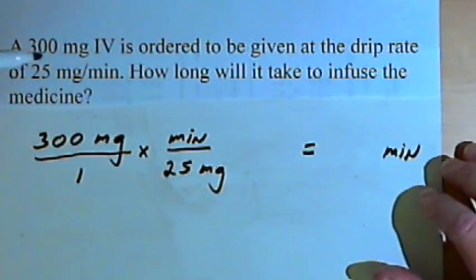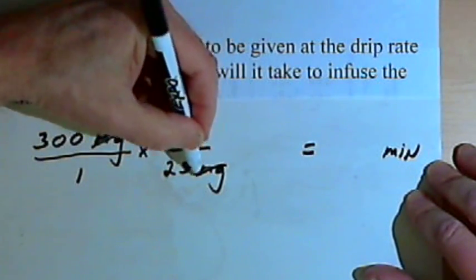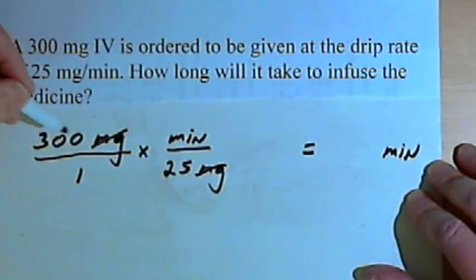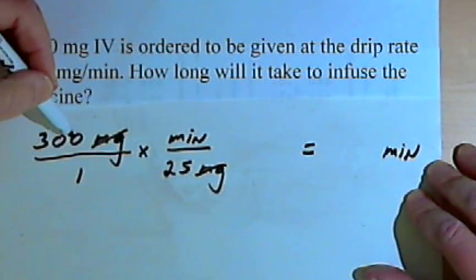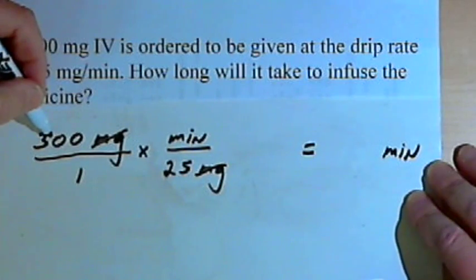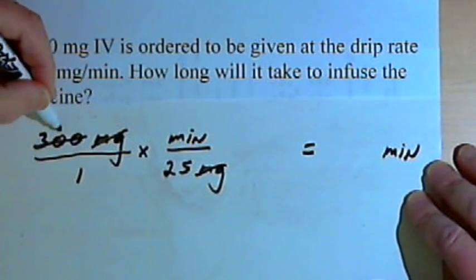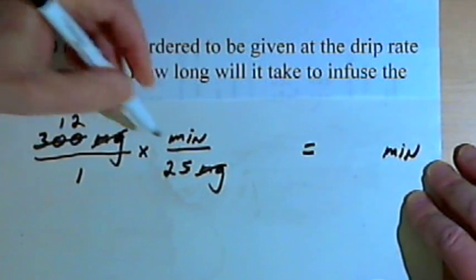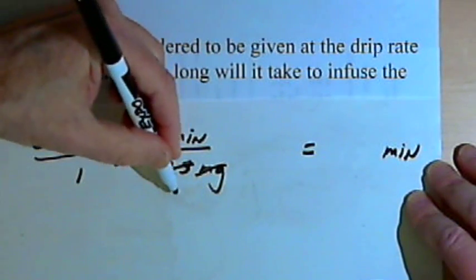Okay, so let's do that. We'll cancel out the milligrams. I've got a 300 and a 25, so I can reduce those numbers. I can divide both of them by 25. 300 divided by 25 is 12, and 25 divided by 25 is just 1.